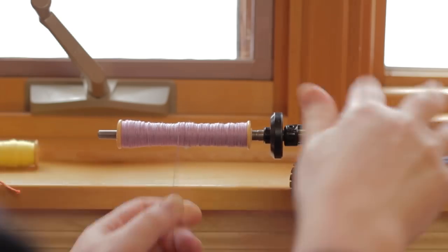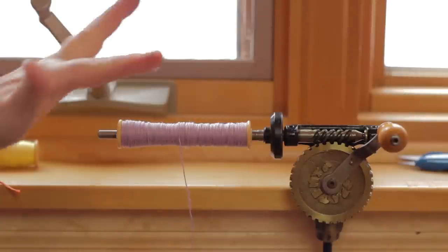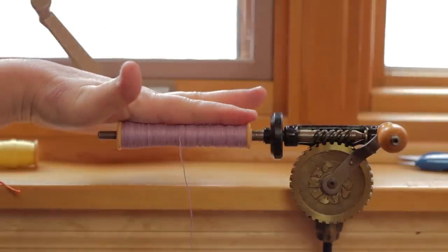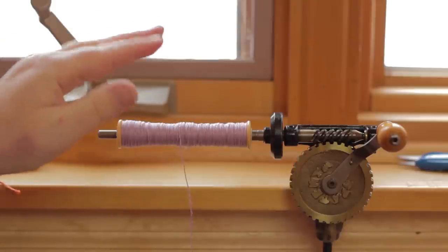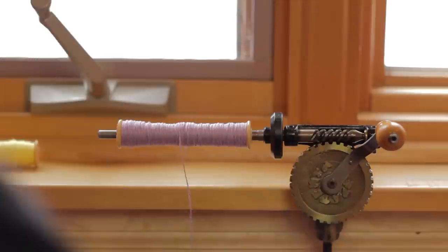And I think that is about as much linen as I would like to put on my bobbin. You can again see that it is well below the flanges there. So there is no buildup. There is no way it will catch in my shuttle and cause an edge problem for my weaving.